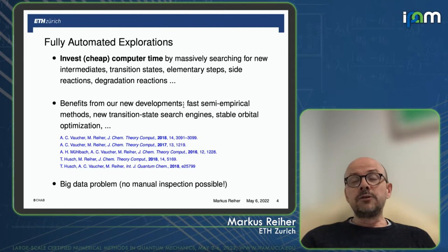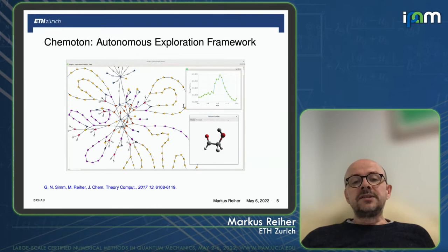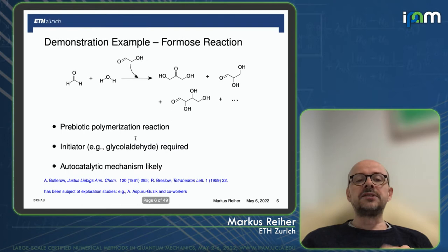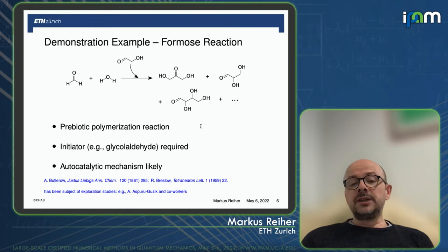Let me show you an old example from a 2017 paper. This tool we developed is called Chemoton — now being released as Chemoton 2.0. In the old version, you see a graphical user interface: each circle represents a molecular structure, and structures are connected through elementary reaction steps. We applied this to what is called the Formose reaction, a condensation reaction of prebiotic relevance. A couple of studies were already in the literature by the Asporo-Guzzi group, and we thought this was a proper example to test our algorithms.